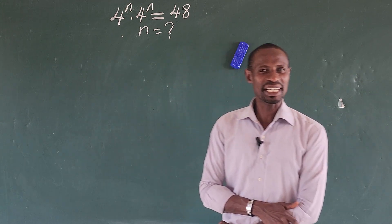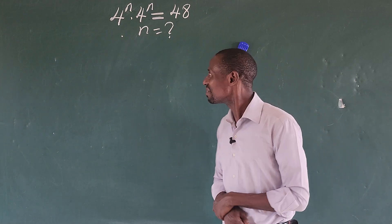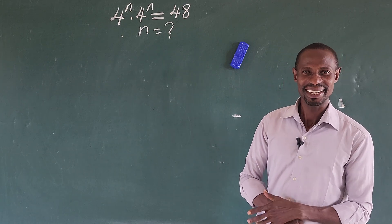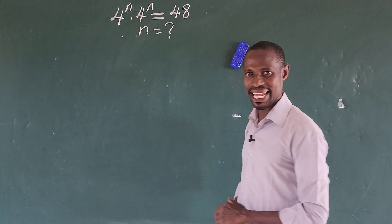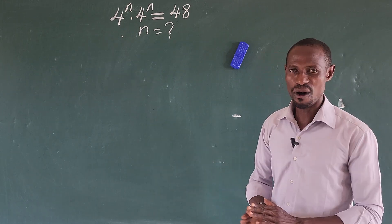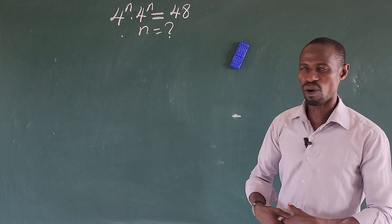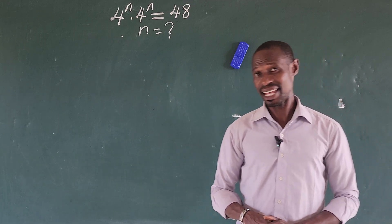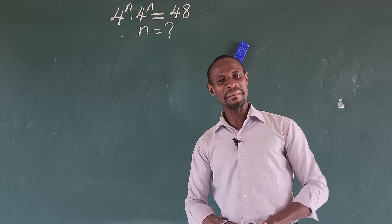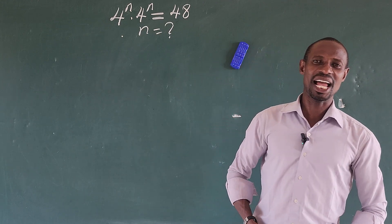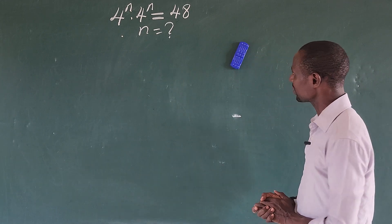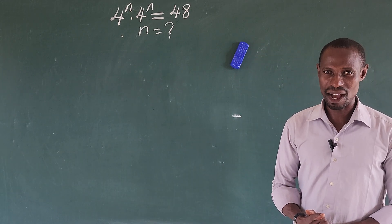Hello, great people, welcome to today's math class. Today we have a very nice equation on the board before us. The question is: 4 to the power of n times 4 to the power of n equals 48. What is the value of n that satisfies this equation? If you are new here, this is Online Math TV, and if you've not subscribed, help our channel by subscribing.